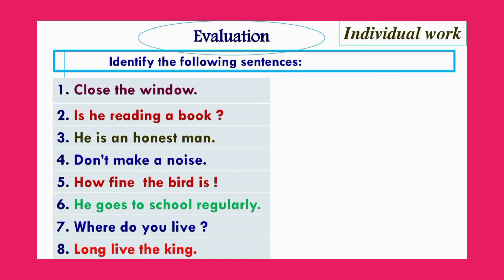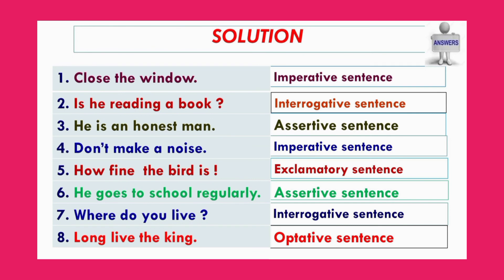Now, evaluation — individual work. Dear learners, please identify the following sentences. Do this in your CW copy right now. If needed, pause the video and solve the problem. Here is the solution: 1. 'Close the window' — imperative. 2. 'Is he reading a book?' — interrogative. 3. 'He is an honest man' — assertive. 4. 'Don't make a noise' — imperative. 5. 'How fine the bird is!' — exclamatory. 6. 'He goes to school regularly' — assertive. 7. 'Where do you live?' — interrogative. 8. 'Long live the king' — optative. Dear learners, match your answer with mine and make corrections if needed.